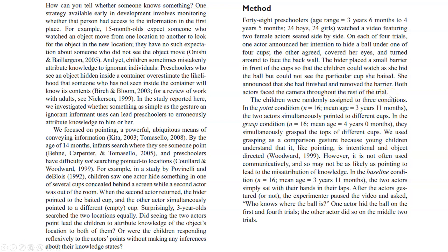The children were randomly assigned to three conditions. In the point condition, the two actors simultaneously pointed to different cups. In the grasp condition, they simultaneously grasped the tops of different cups. Grasping was used as a comparison gesture because young children understand it is intentional and object-directed like pointing, however it is not often used communicatively and so may not be as likely as pointing to lead to the misattribution of knowledge.